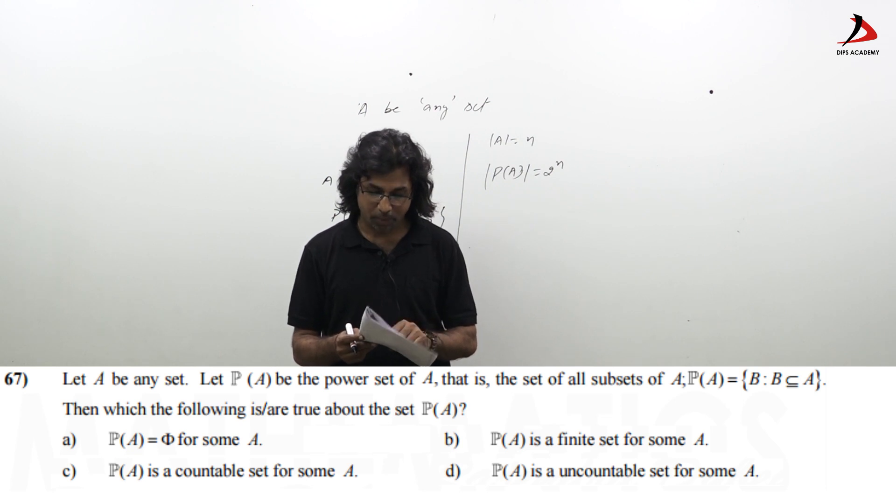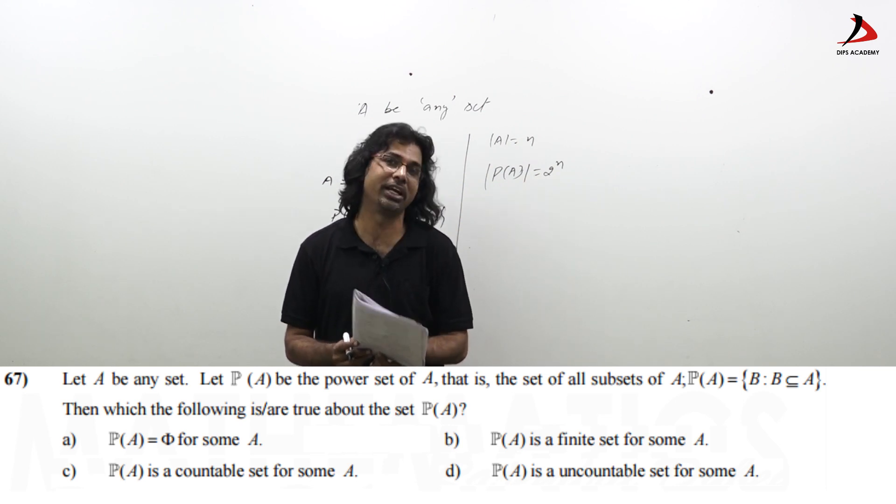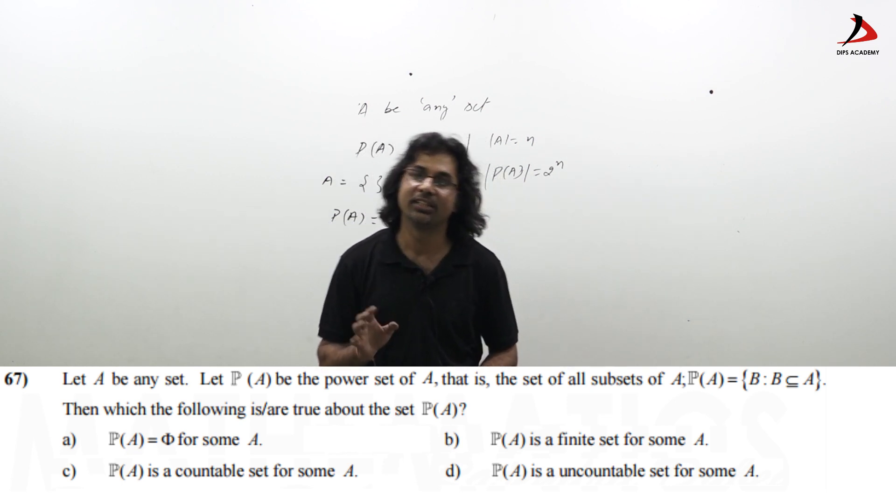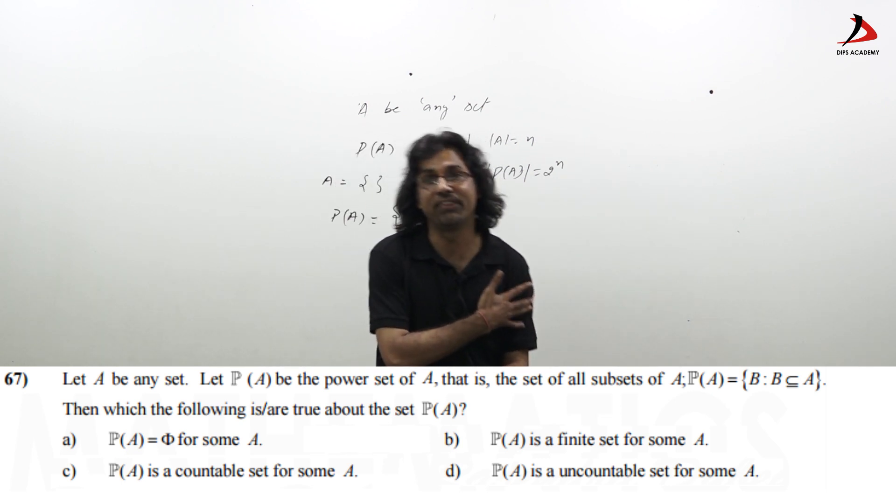Now, third option, P(A) is countable set for some A. Now, whether this option is correct or incorrect. Now, here I just give you some references that there are differences of definition of countable set.